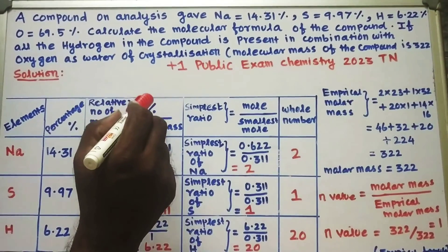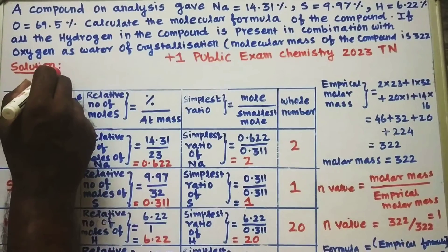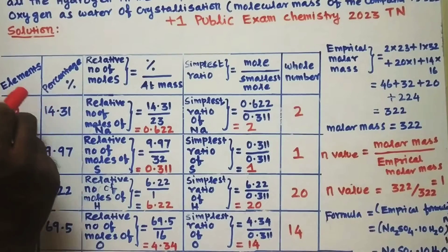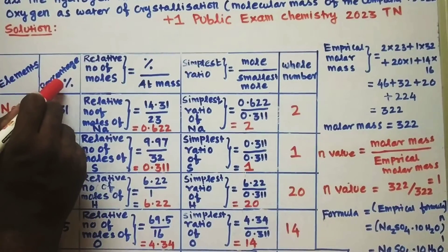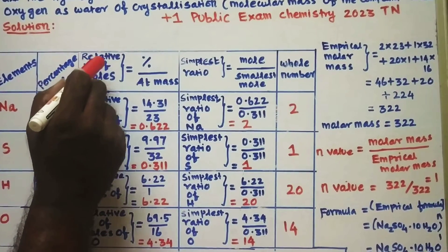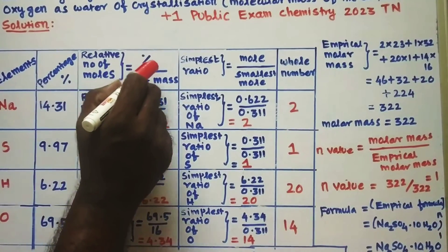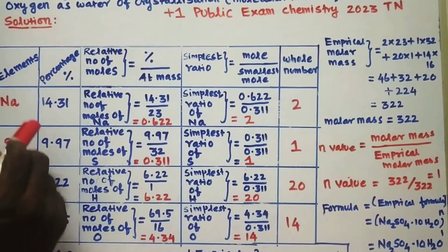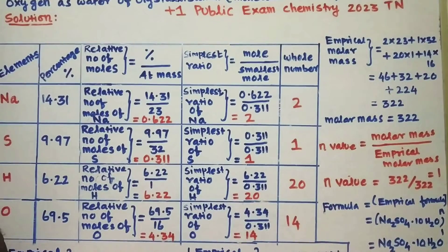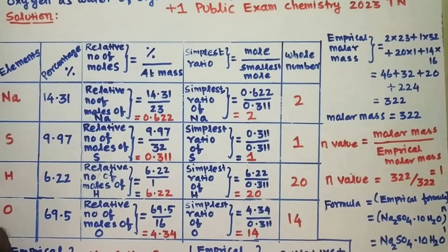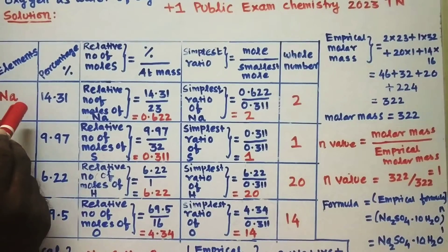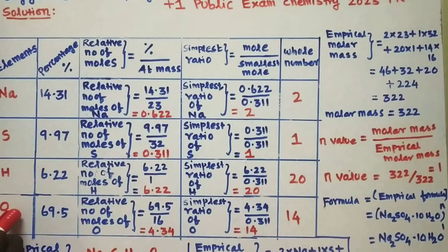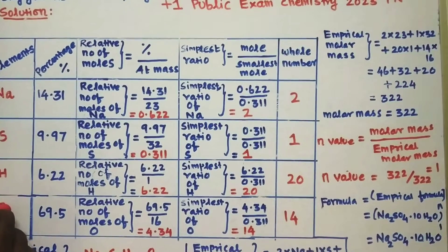Now we are going to see the solution. Open a tabular column. It contains the columns: elements, percentage, relative number of moles, simplest ratio, and whole number. There are 4 elements given: sodium, sulfur, hydrogen, and oxygen.